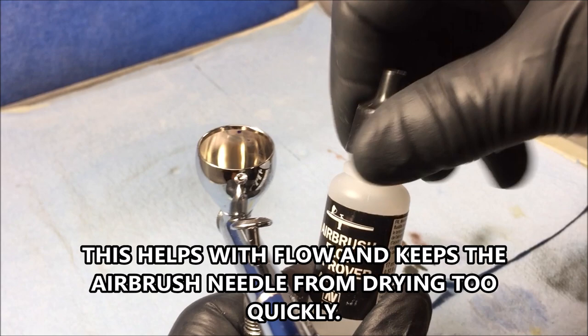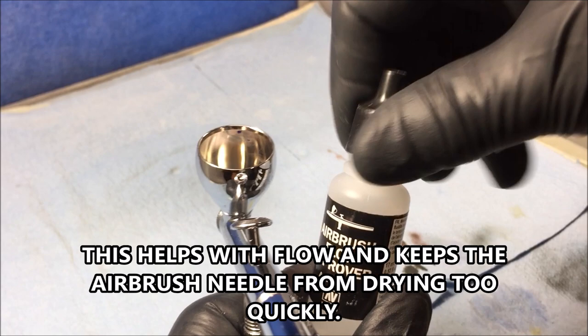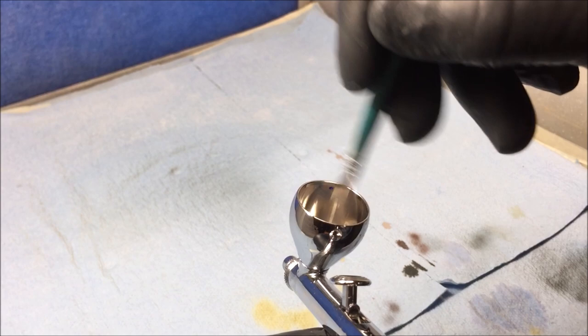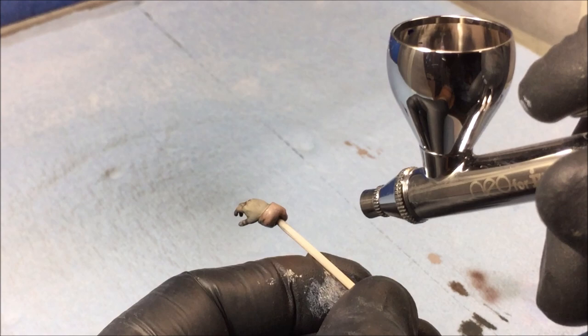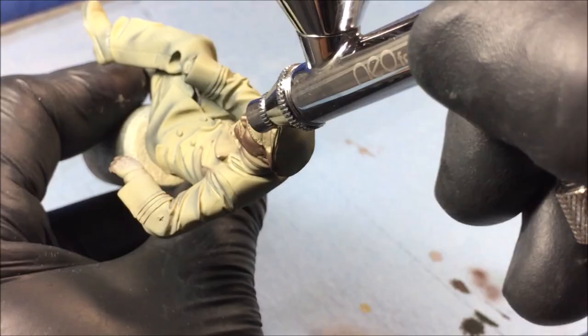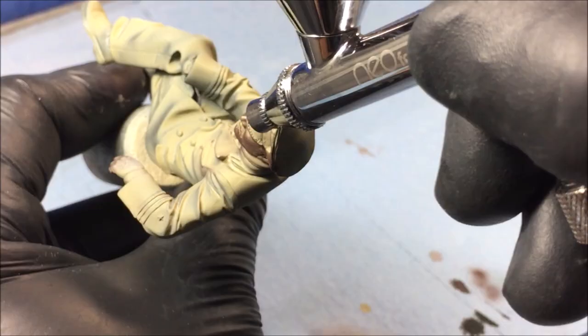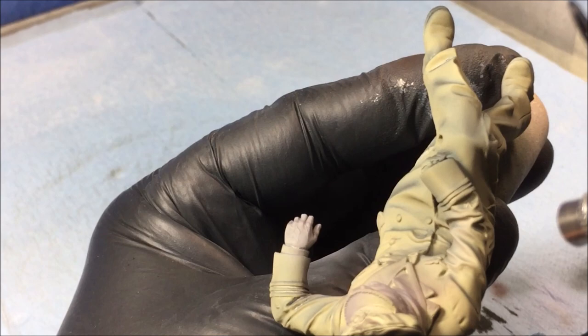If you don't know of airbrush flow improver, I would get yourself a bottle of that - either Vallejo or some other companies make a similar product. It is excellent. It will help keep the tip of your needle moist as you're spraying and you won't get as much dry tip. It's a great tool to have in your airbrushing arsenal. I'd go out and get yourself some if you can find it in your area or order online. It's good stuff.